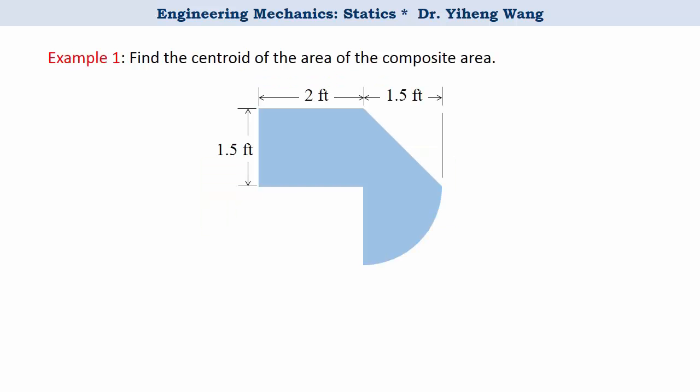Now let's look at this example. Find the centroid of this composite area. From observation, we can tell it is a combination of a rectangle, an isosceles right triangle, and a quarter of a circular area.